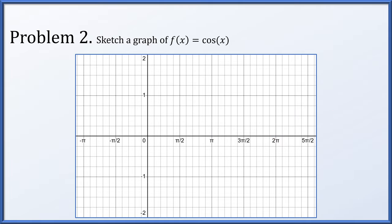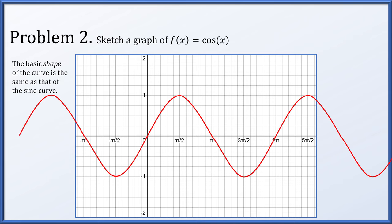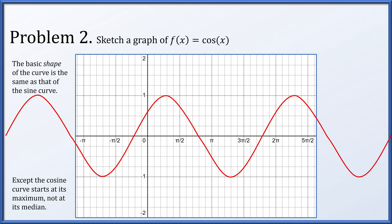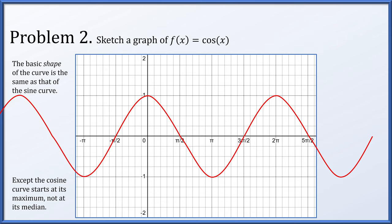Problem 2: Let's sketch a graph of f(x) = cos(x). The basic shape of the cosine curve is the same as that of the sine curve. However, the cosine curve starts at the maximum, because we're tracking a horizontal coordinate. On the unit circle, all the way to the right is the maximum horizontal coordinate. So we simply slide the curve over, starting at its maximum height of 1. Here is a plot of f(x) = cos(x).